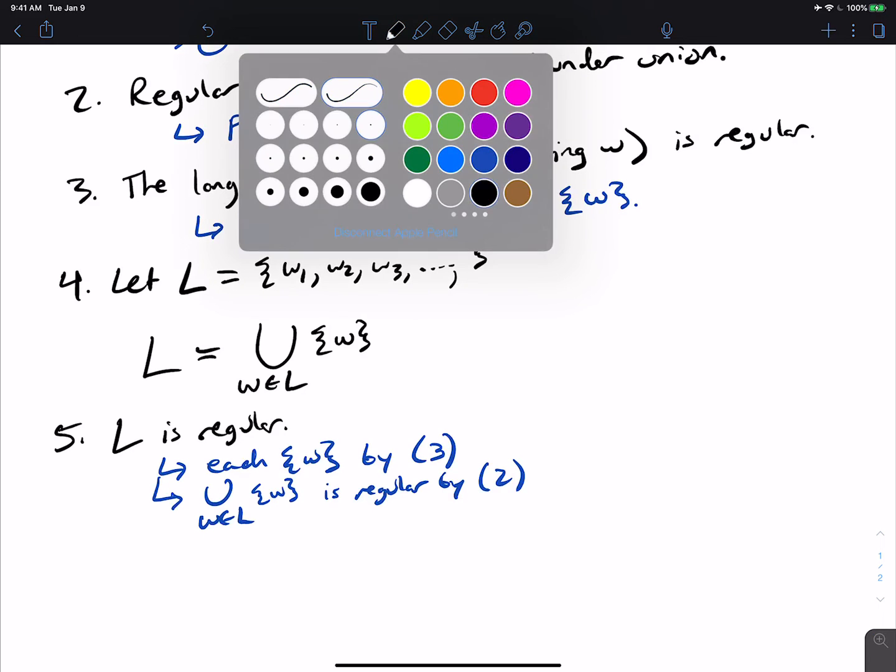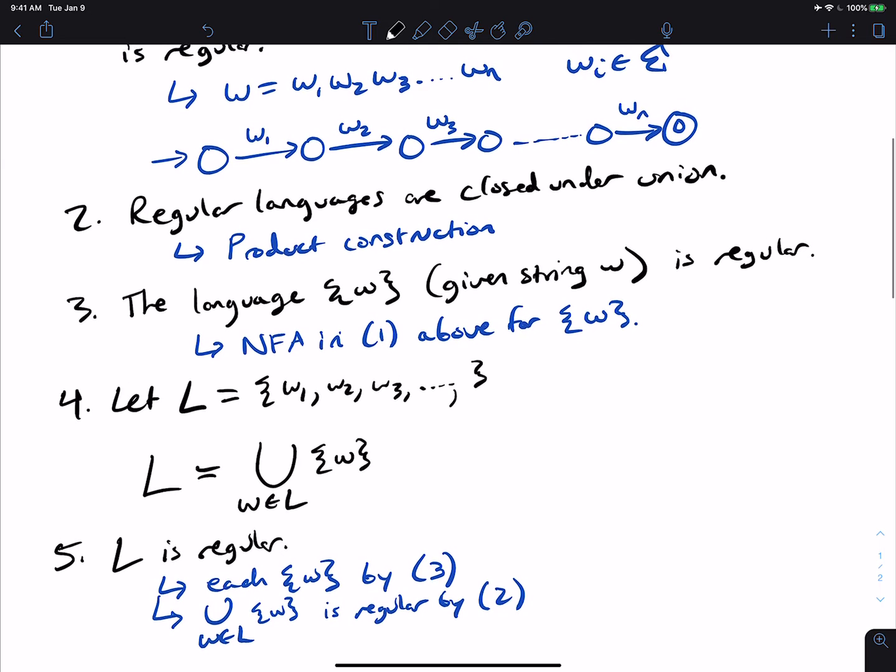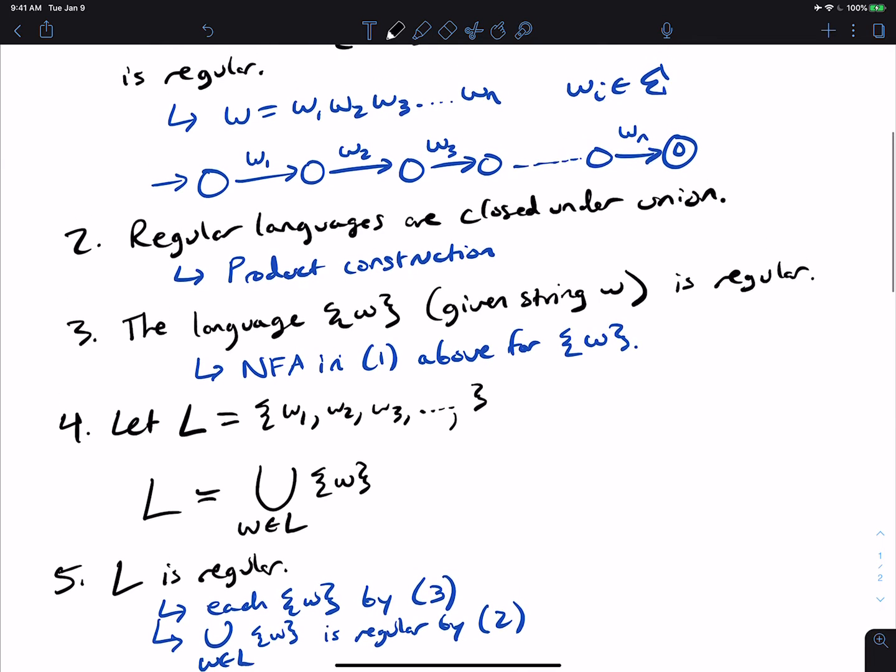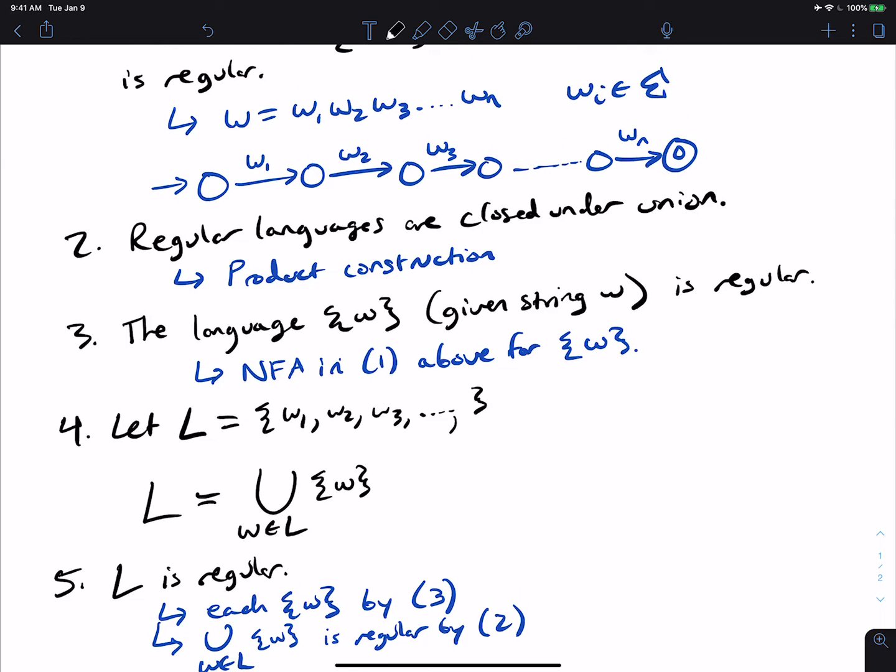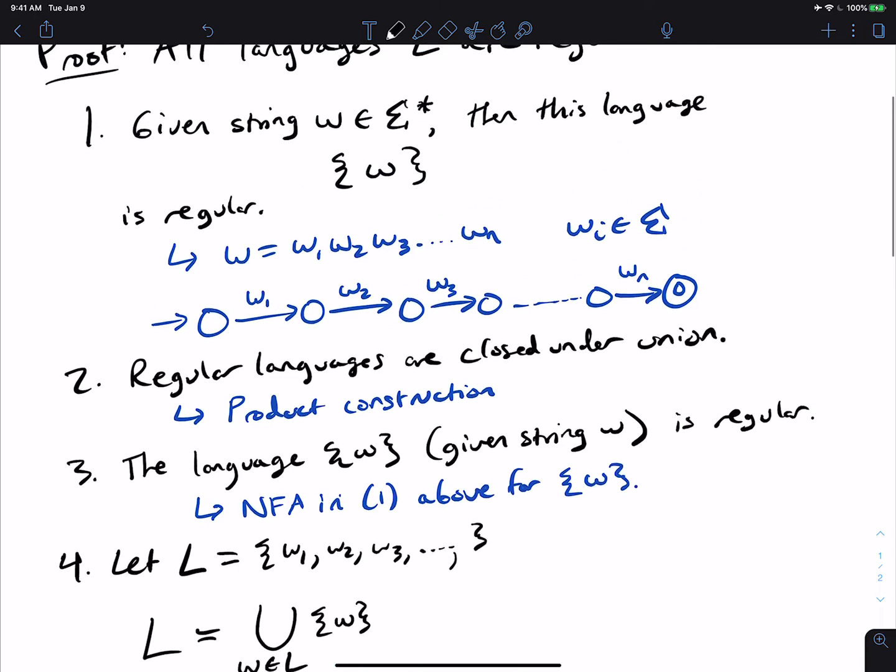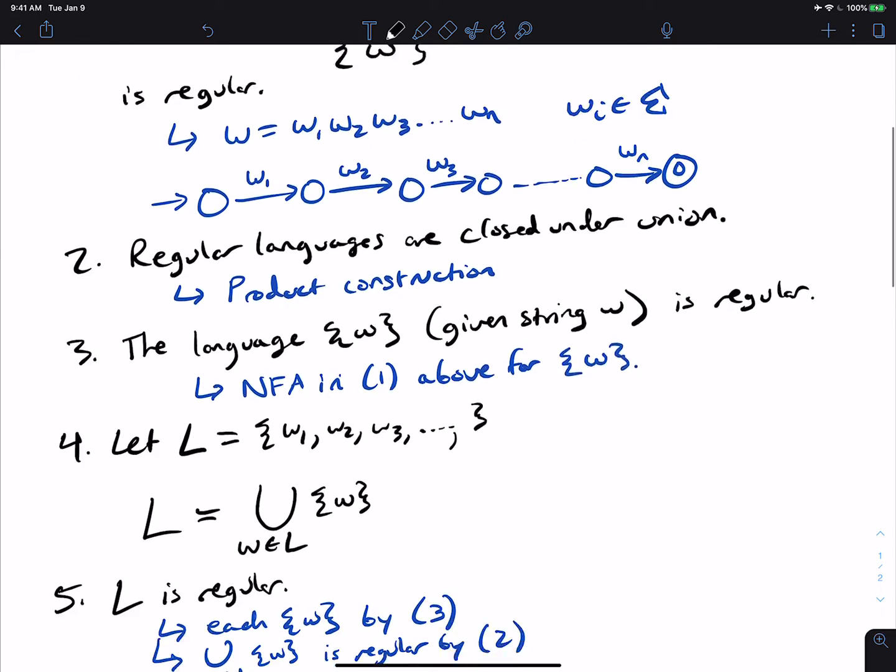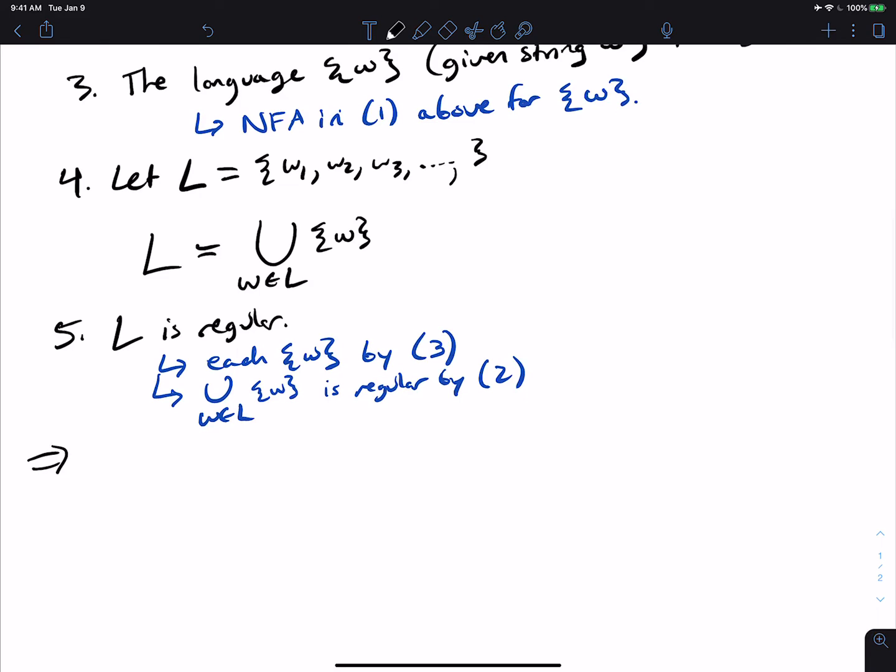And we didn't assume anything particular about what L is. L could be any language. And so therefore, by the properties of regular languages, L must be regular. So this tells us L is regular. And L was arbitrary. So that tells us that all languages are regular.